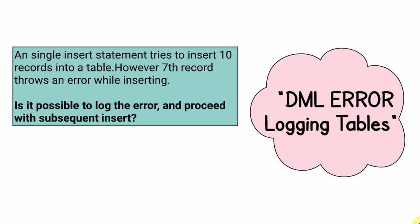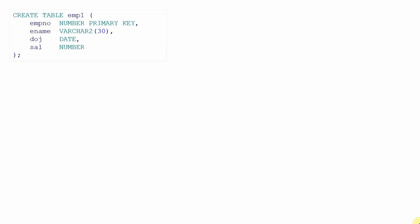Oracle goes with a principle like either all or none. But during development, we often think: why can't Oracle insert the 999 valid records and exclude the one that is going to error out? Is there any way to exclude the record that will error? Yes, it is possible by using this concept called DML Error Logging Table. Let me first show you a simple scenario, and from there we will understand how to create and use the error log table.